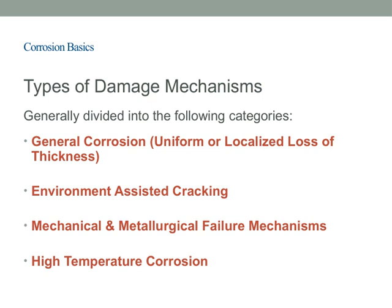Environment-assisted cracking is a more insidious form of damage because it can occur even without obvious uniform degradation. Then we encounter mechanical and metallurgical failure mechanisms — failures related to the material's own properties or external mechanical forces, things like fatigue, stress corrosion cracking, or phase changes within the metal that weaken it over time. Finally, there's high-temperature corrosion, particularly relevant in environments where metals are exposed to elevated temperatures, where corrosion processes can accelerate or change form.